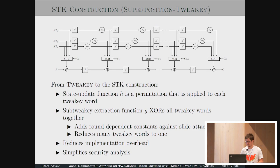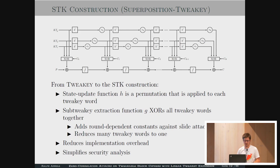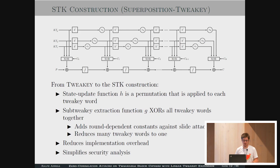One instantiation is the SDK construction. Instead of just one tweak key line, you can have several tweak key lines. It uses a state update function h, which is a permutation applied to each of the tweak keywords. There is also a multiplication that is different for each tweak keyword, and a subtweak key extraction function g which XORs the tweak keywords together. Runtime-dependent constants are added for slide attacks. The g function reduces many tweak keywords to one, with the overall goal to reduce implementation overhead and simplify security analysis.